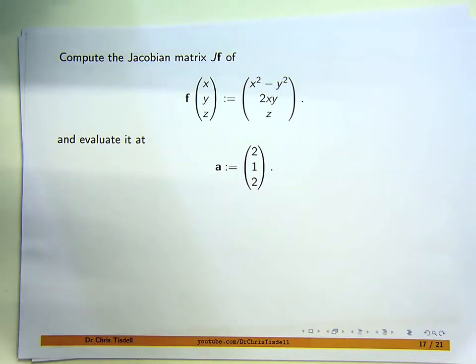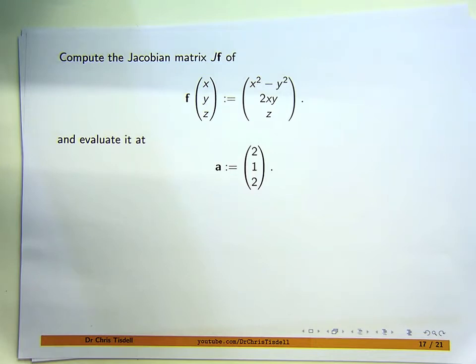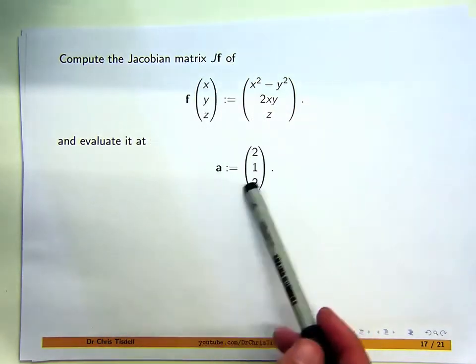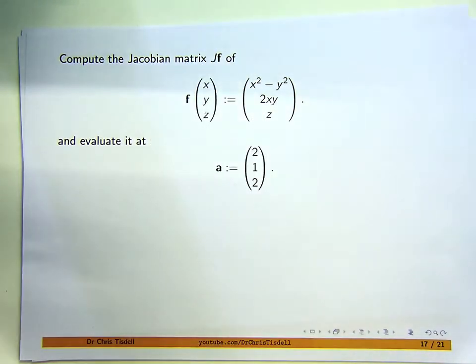Here we're given a question involving a function f — it's a vector-valued function — and we're asked to compute the Jacobian matrix of f, which we denote by Jf. We're asked to evaluate the matrix at a particular given point, or a point associated with a vector a.